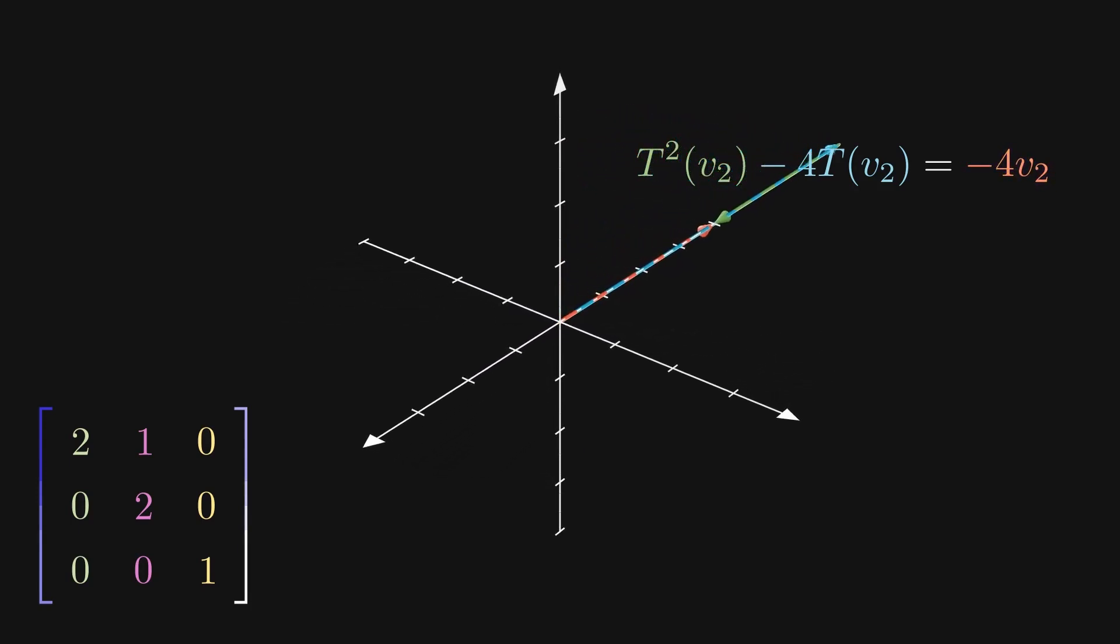This obviously is not as easily visualized as just scaling by an eigenvalue, but it captures the invariance of the transformation.